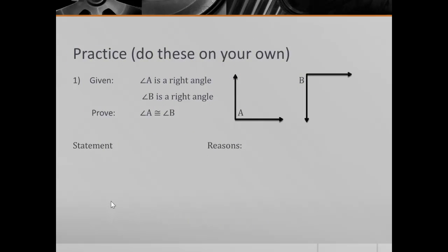This one I want you to do on your own — go ahead and pause. This one should be fairly easy; look back a couple — that's my hint. You're given that angle A is a right angle and angle B is a right angle, and you need to prove that angle A is congruent to angle B. The only difference between this one and the last one is that angle B has been rotated a little bit, so otherwise it's the same exact problem.